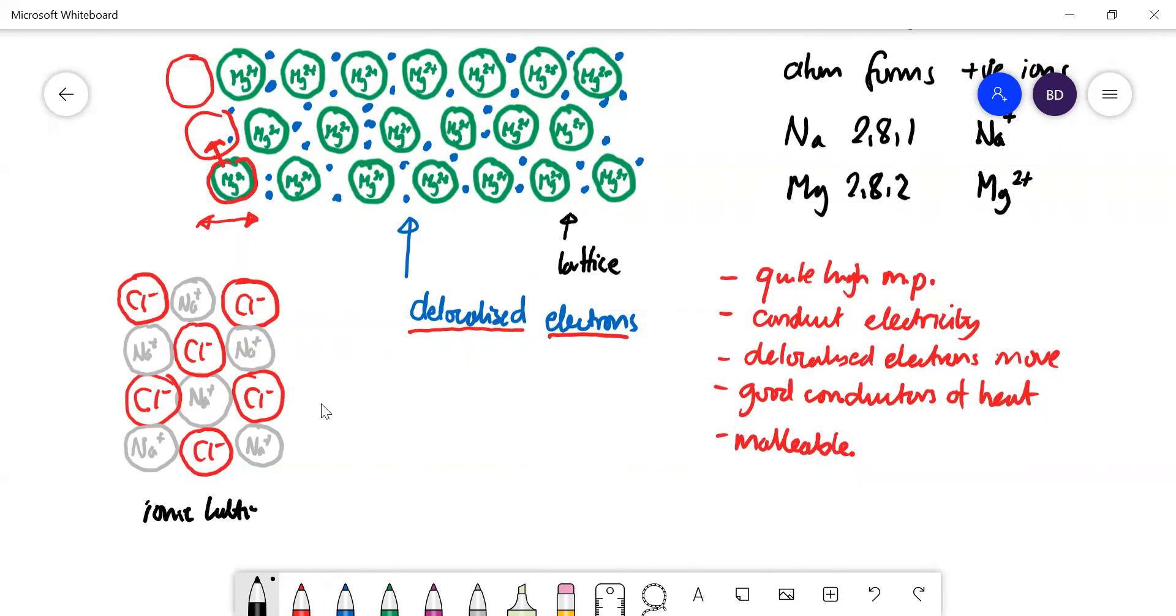And that will be brittle. So if you put pressure on that it tends to snap, it doesn't—you can't make it change shape. That is relatively easy to explain. So imagine if we start pushing down on that row and pushing up on this row. If we manage to move the ions...